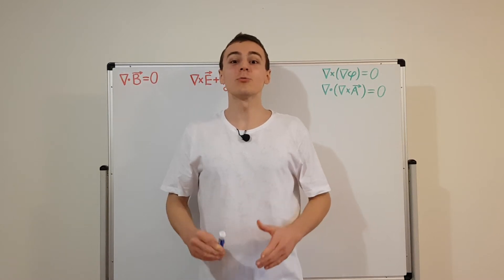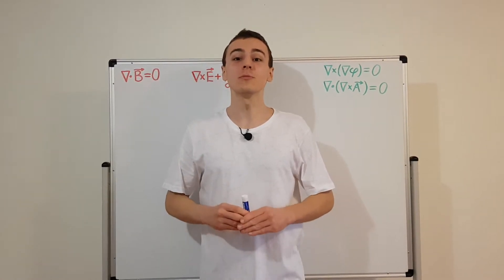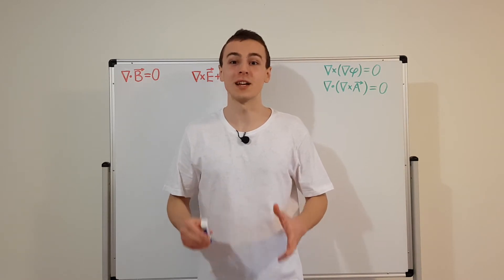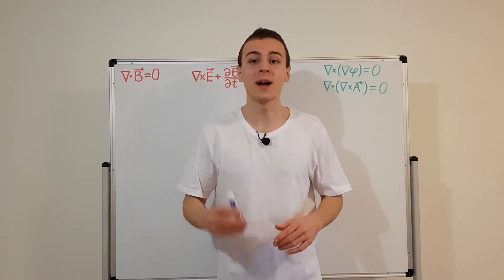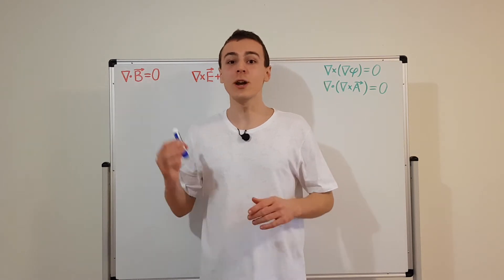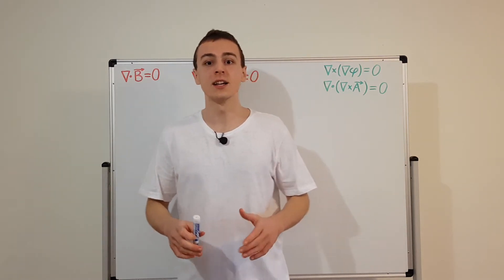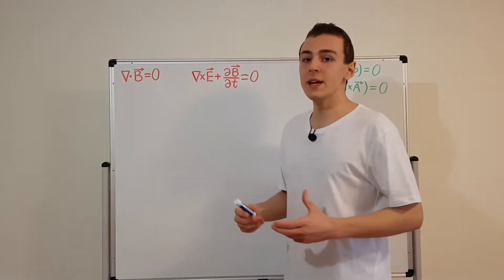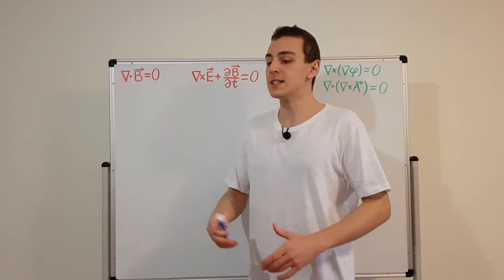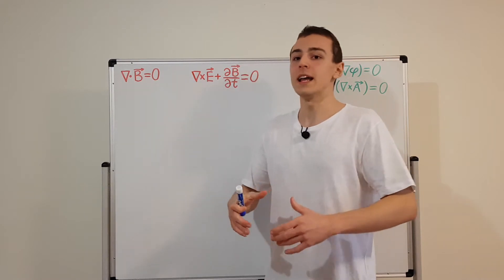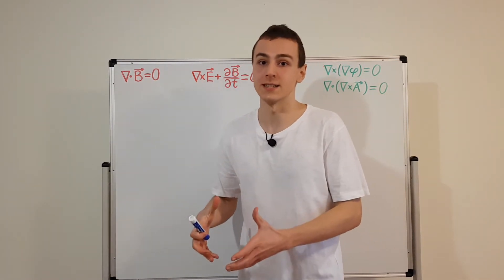In this video I'm going to write the electric and magnetic fields in terms of the scalar and vector potentials. I'm going to start off with two of Maxwell's equations — the homogeneous equations, meaning they have no source terms. A source term would include the charge density or the current density.